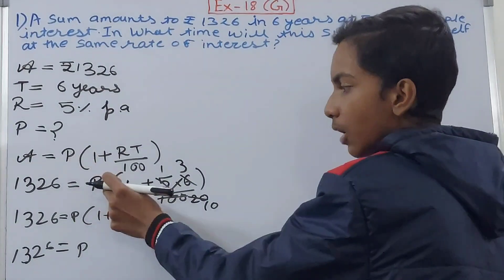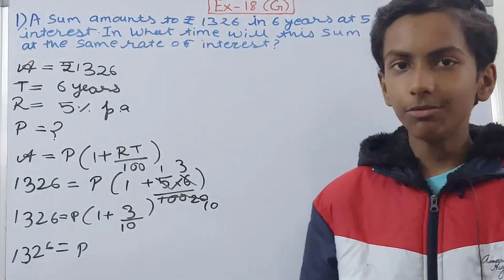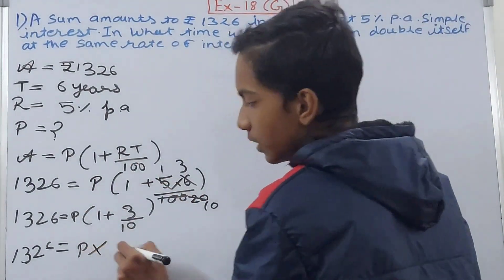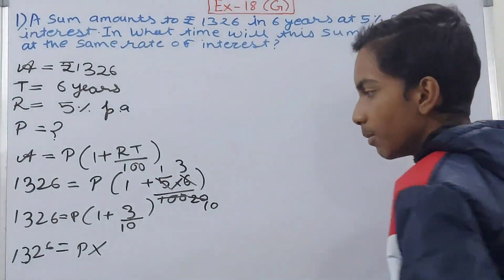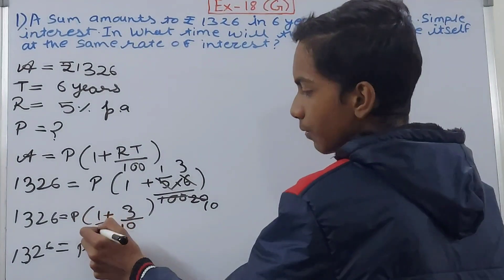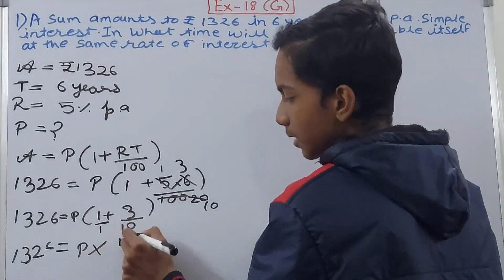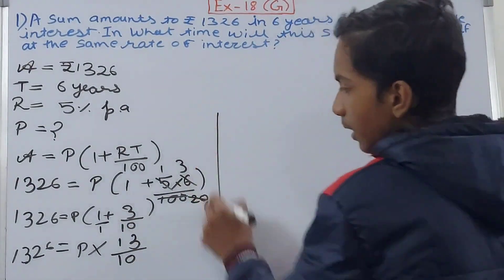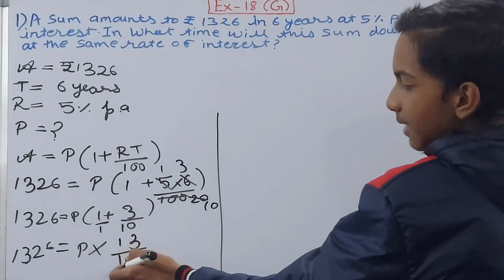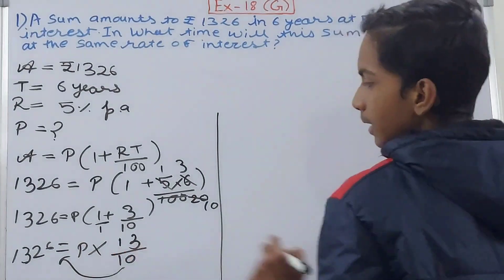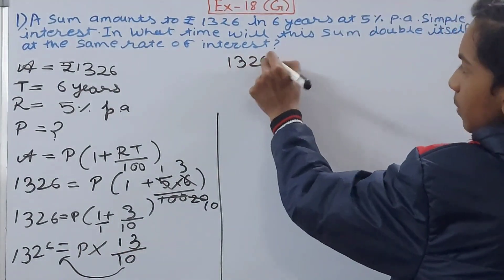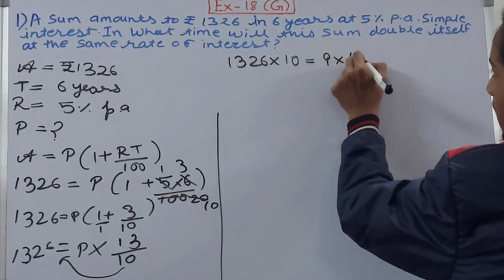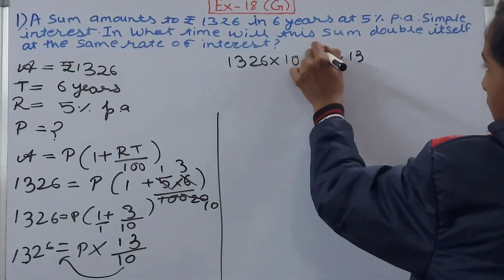Remember: if no sign is present between brackets, it means multiplication. Opening the brackets: 1 upon 1 becomes 10 upon 10, and 10 + 3 = 13 upon 10. So we have 1326 = P × (13/10). Moving 10 to the other side: 1326 × 10 = P × 13.